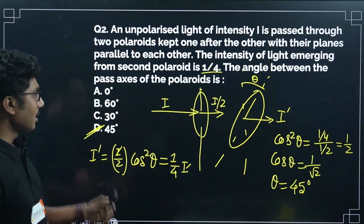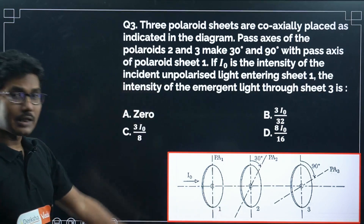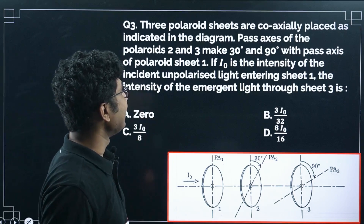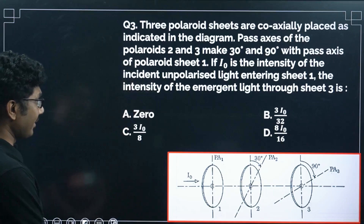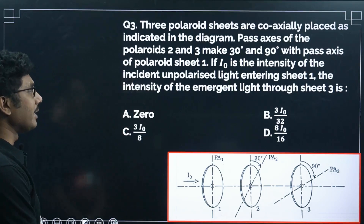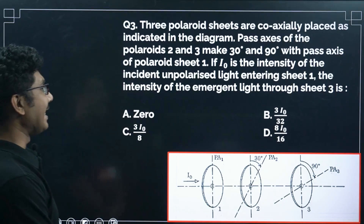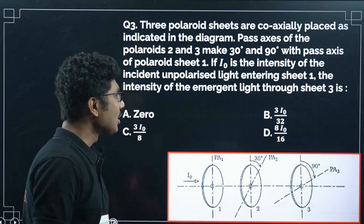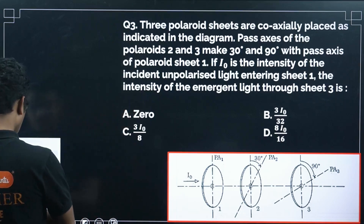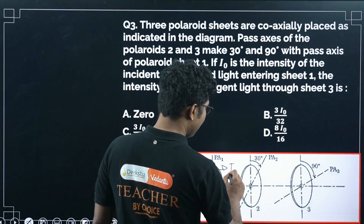Next question: three polaroid sheets are coaxially placed. The pass axes of polaroids 2 and 3 make 30 degrees and 90 degrees respectively with the pass axis of polaroid 1. If I₀ is the intensity of the incident unpolarized light entering sheet 1, find the intensity of emergent light through sheet 3.